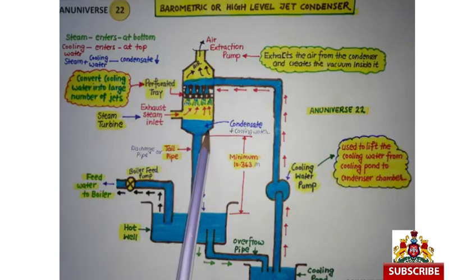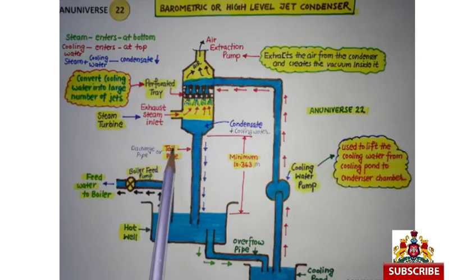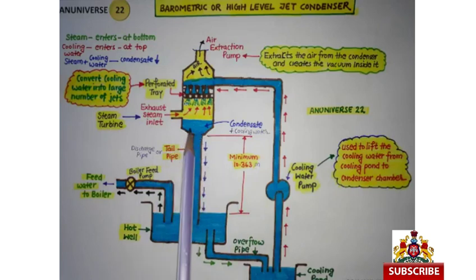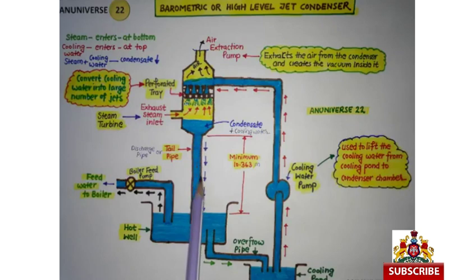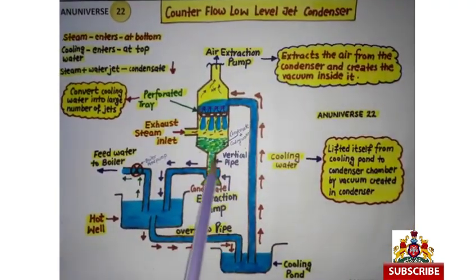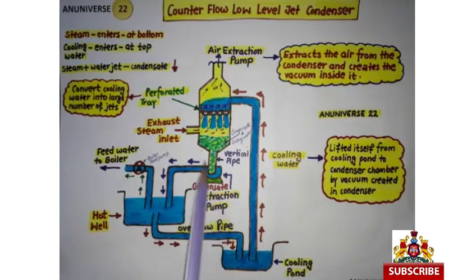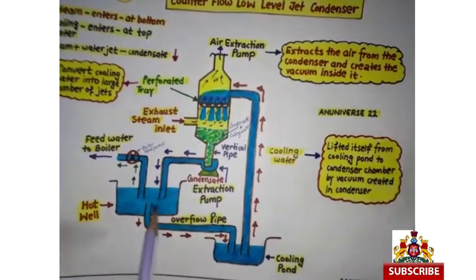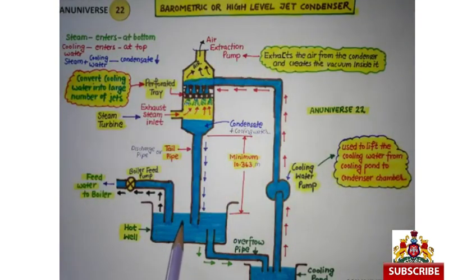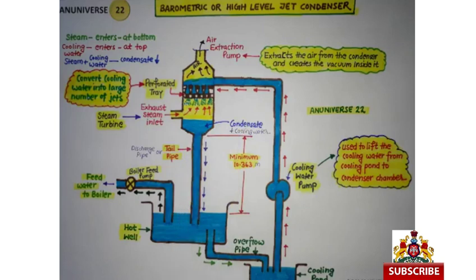Condensate और Cooling Water collect हो जाता है और वह इस Long Pipe की मदद से, जिसे Discharge Pipe या Tail Pipe कहते हैं और जिसकी लंबाई Minimum 10.363 मीटर होती है, Hot Well में भेजा जाता है। यह Gravitational Force की वजह से अपने आप flow करता है। इसमें अलग से Condensate Extraction Pump की जरूरत नहीं होती, क्योंकि Condensate Extraction Pump की जरूरत Low Level Jet Condenser में होती है। Barometric या High Level Jet Condenser में एक Long Discharge Pipe लगी होती है जिसकी मदद से Condensate और Cooling Water Gravitational Force की वजह से Hot Well में discharge किया जाता है।